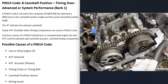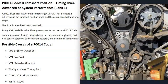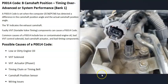Another cause can be a bad timing chain or timing belt. These components have timing marks that all need to line up — if they don't, it throws everything off. Over time, timing belts and chains can stretch, which also causes issues. There's also a tensioner that keeps everything tight; if the tensioner goes bad and everything becomes loose, that can throw off the timing as well.